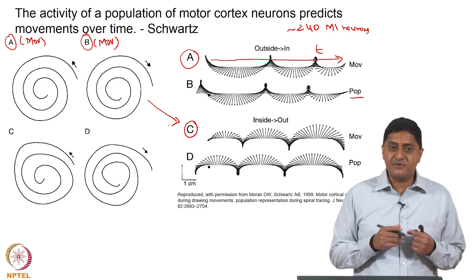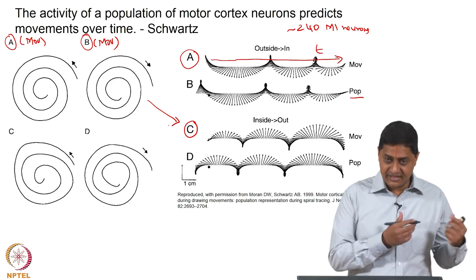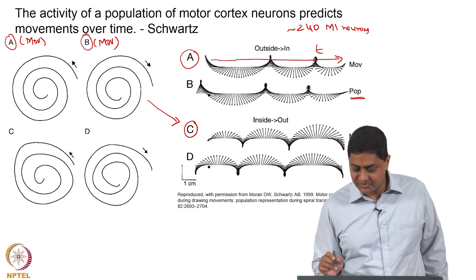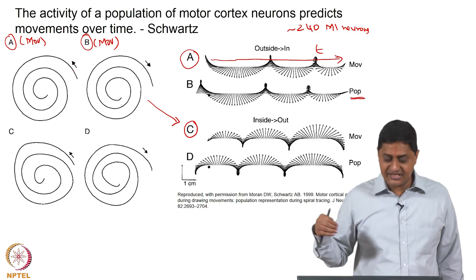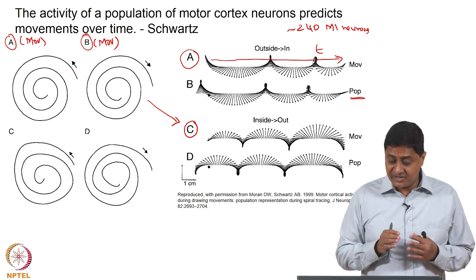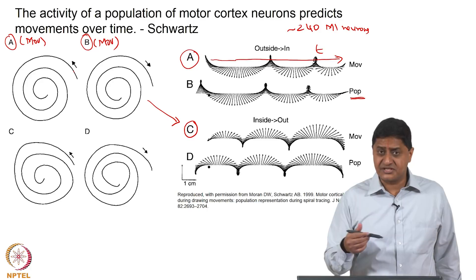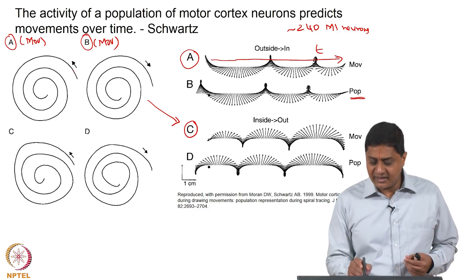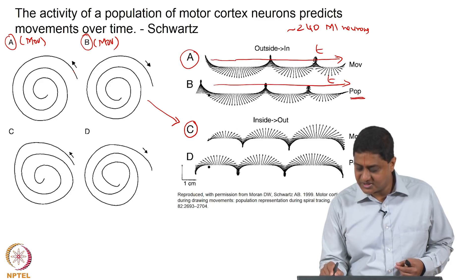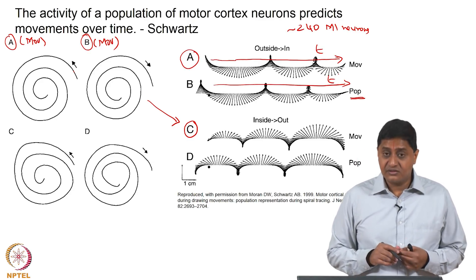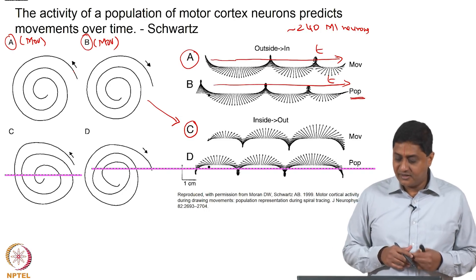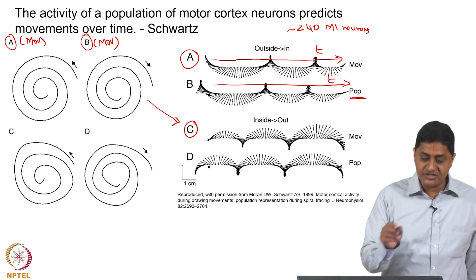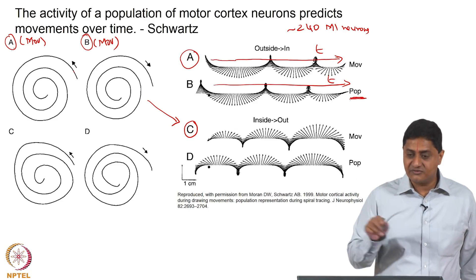From 240 neurons it is possible to get directional tuning curves, as in the case of Georgopoulos. I am recording from these neurons simultaneously while movement is also being recorded. From their activity, instantaneous directions and levels of activity can be represented as vectors, arranged as a temporal sequence. I could then use this to reconstruct a trajectory — this is the population activity when the spiral is going from outside to inside.